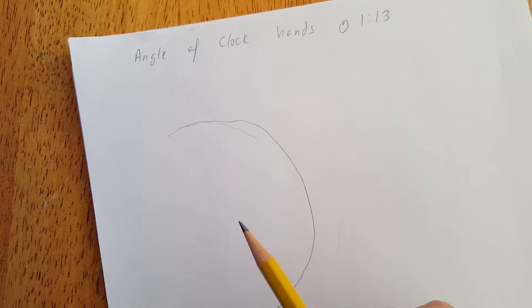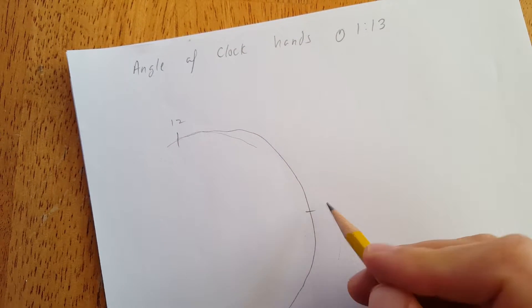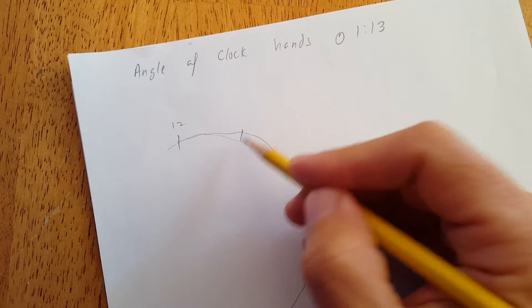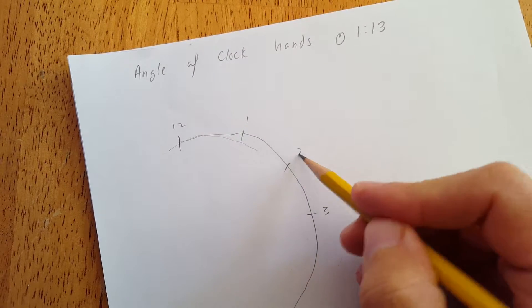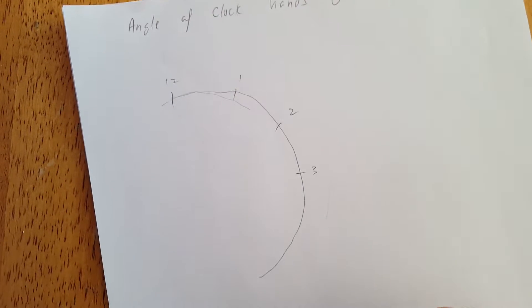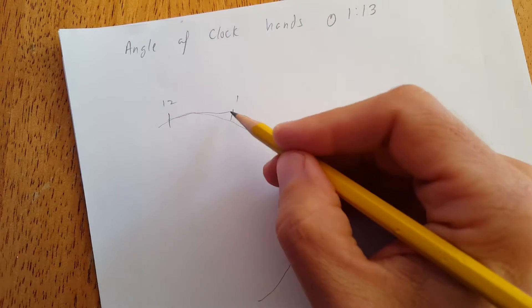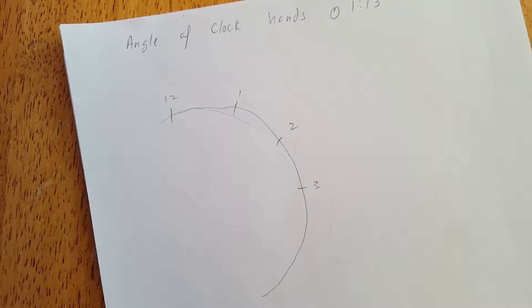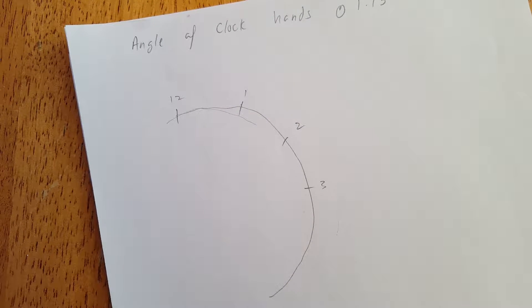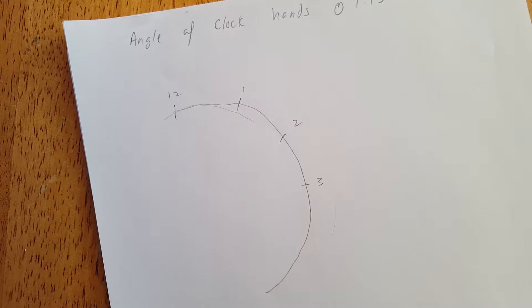We want to draw our clock hands. So here's 12, 3, 1, 2, okay 1:13. For young people who only have seen digital clocks, I explained this problem to some high school students and it didn't occur to me that some of them don't even use analog clocks anymore.